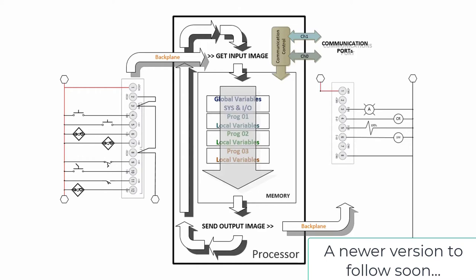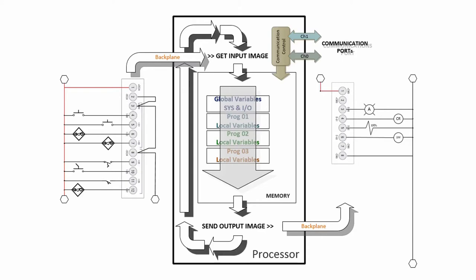Across the backplane we collect up the input image and store it in the global variables, then we execute the program changing the state of both global variables, outputs, and local variables. Each program can read any of the global variables but only the local variables of its own program. Program two can read and write to global variables and its own local variables, but it cannot see or touch anything in program one or program three. The output image is then sent out. With the Micro 800s, especially the 810, there is no real backplane — you cannot expand it. The 820, 830, 850, and 870 you can expand the I/O, so they do have a backplane even though it's encapsulated in the plastic box.